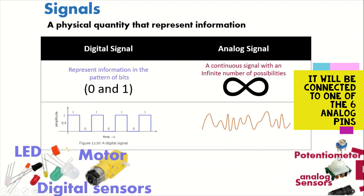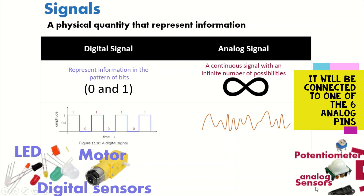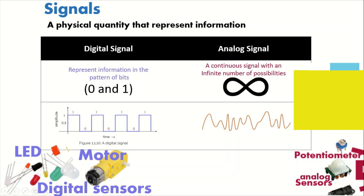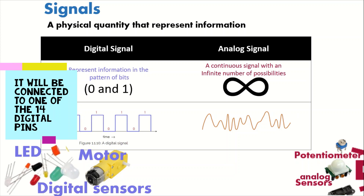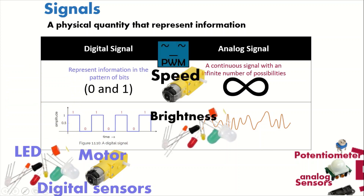For example, a potentiometer has a range of information, so it is considered analog and should be connected to the analog section. There are also two types of sensors: analog sensors and digital sensors. If a sensor gives a range of information it is analog; if it gives only on or off — just two states, high or low — it is digital. An LED is digital because it is only on or off; a motor is also digital if you just want to turn it on or off.